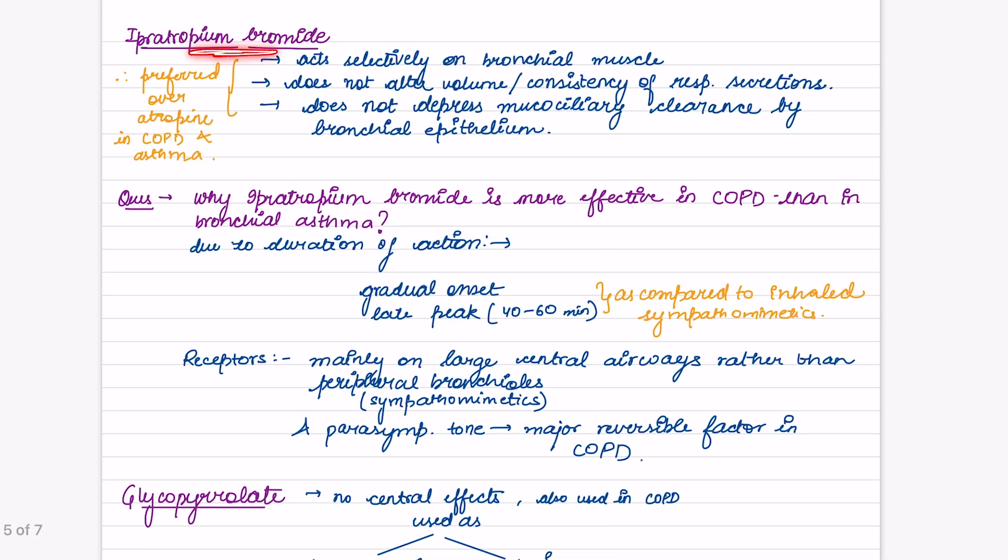Let's take a look at ipratropium bromide. Ipratropium bromide is a quaternary compound, a quaternary atropine substitute. It acts selectively on bronchial muscle and does not alter the volume or consistency of respiratory secretions. It does not depress mucociliary clearance by bronchial epithelium. Therefore it is preferred over atropine in COPD and asthma. It has a gradual onset and a late peak.